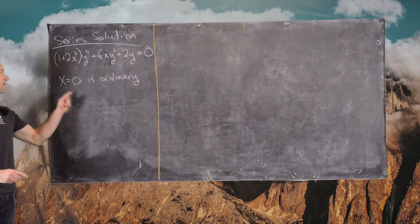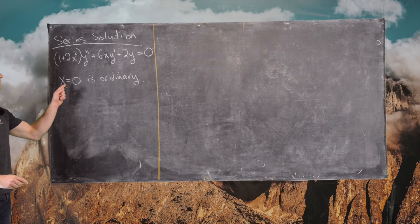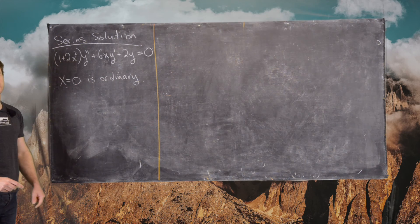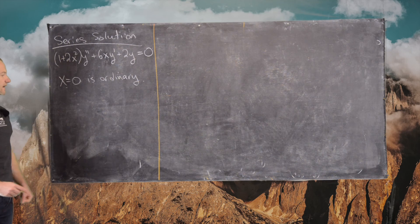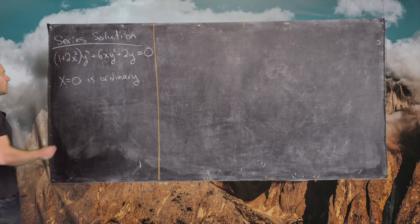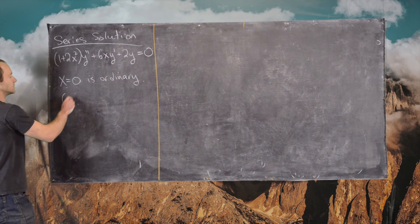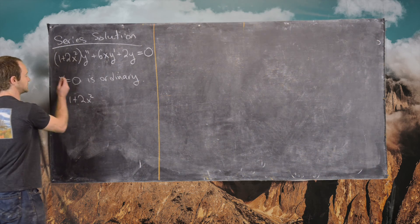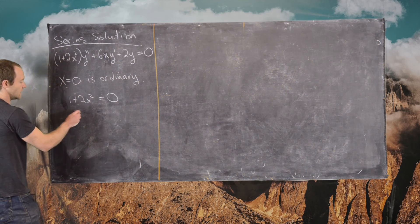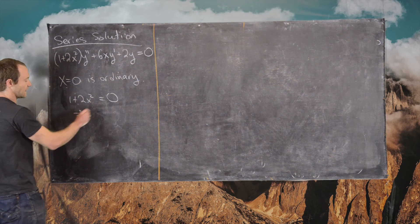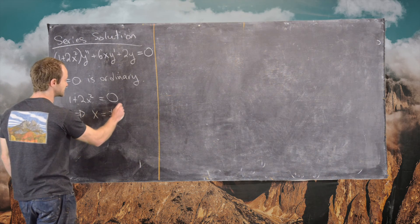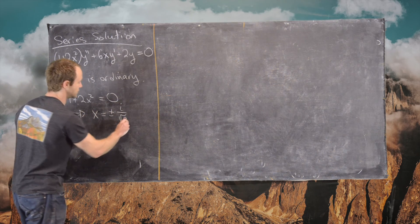That means we can take our power series solution about x equals 0 using the technique of series solutions at ordinary points. Also notice that 1 plus 2x squared equals 0 implies x equals plus or minus i over root 2.